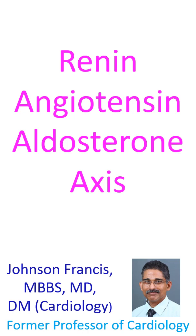Decreased blood flow to the kidneys causes them to secrete renin. Renin increases the production of angiotensin, a potent vasoconstrictor which causes contraction of smooth muscles of the blood vessels.